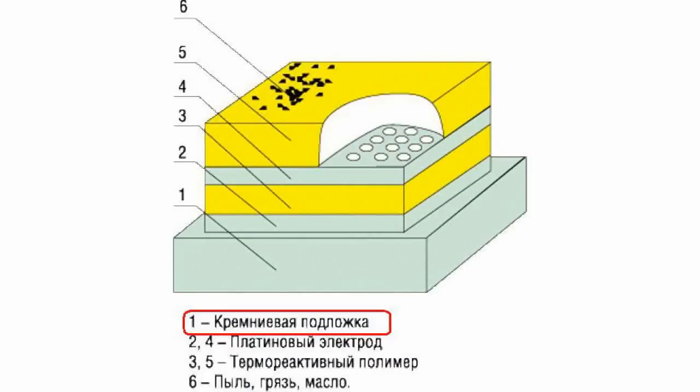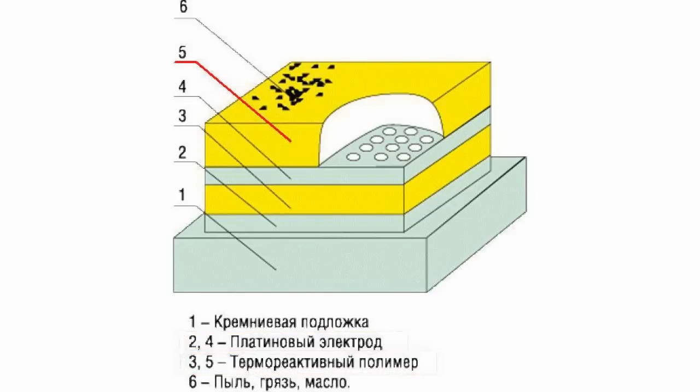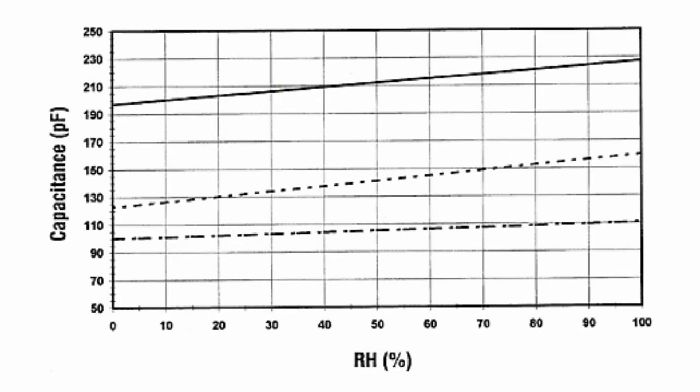Capacitive relative humidity sensors are widely used industrially in a variety of commercial applications and weather bureau. They consist of a substrate on which a polymer or a thin layer of metal oxide is coated between two metal electrodes. The sensitive surface is covered with a porous metal electrode to protect it from contamination. The substrate is usually glass, ceramic, or silicon.